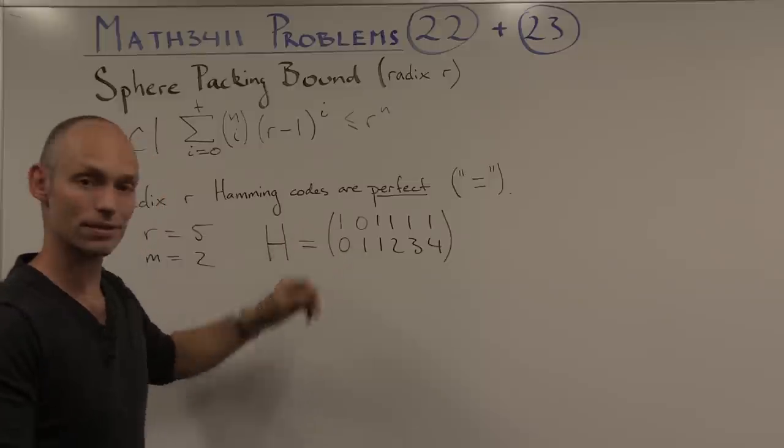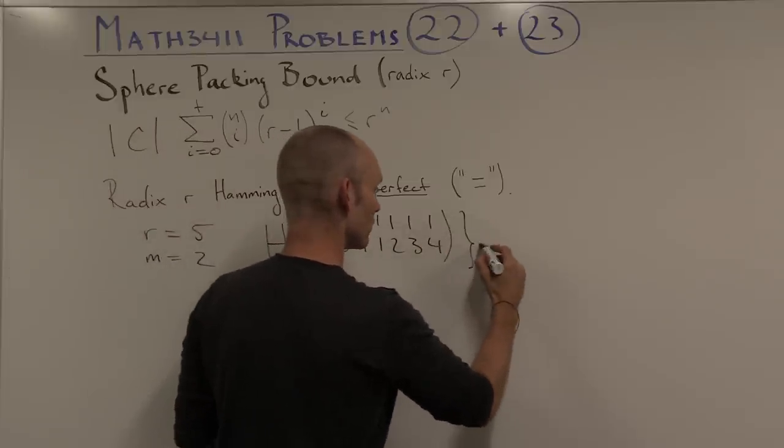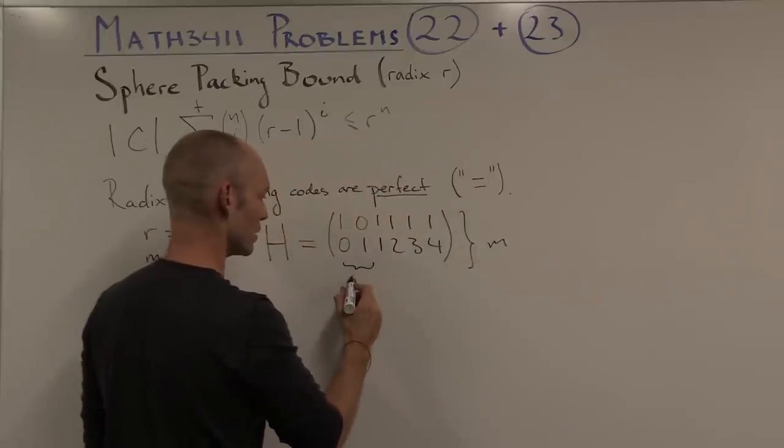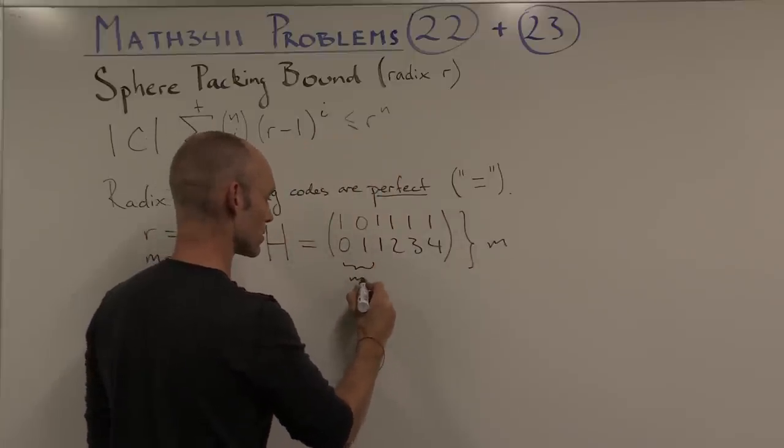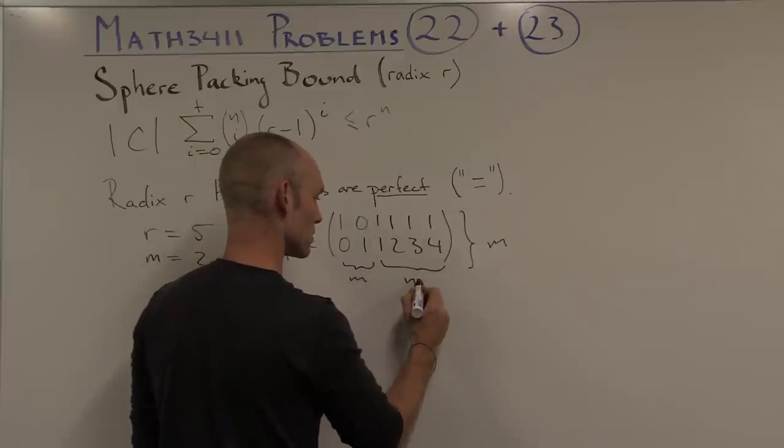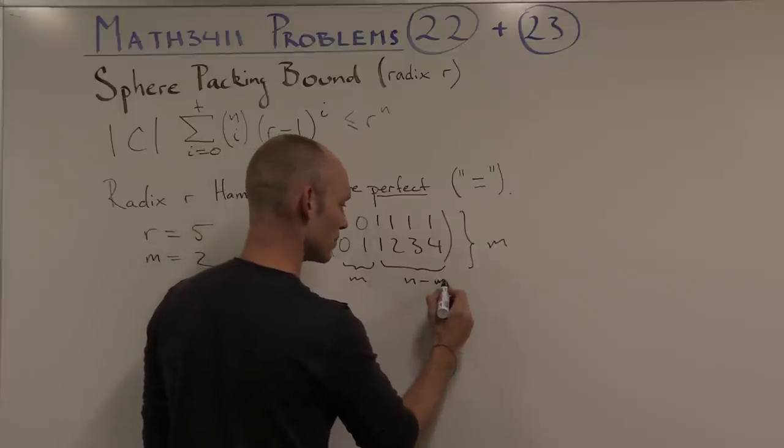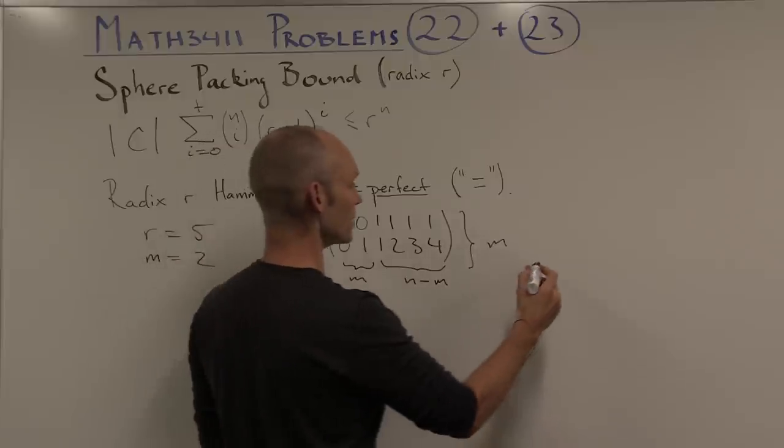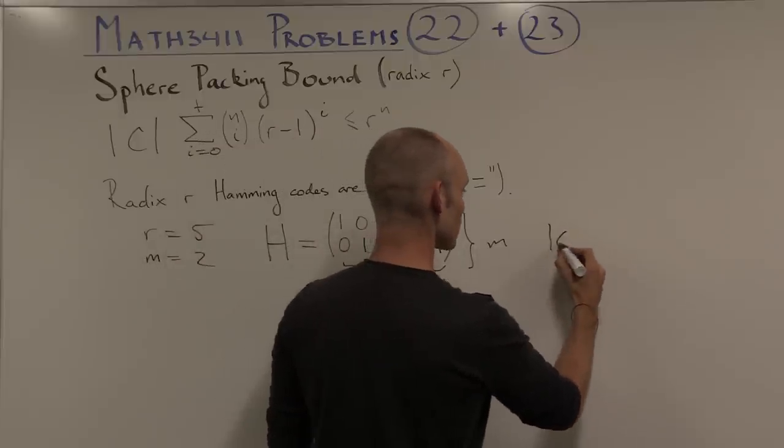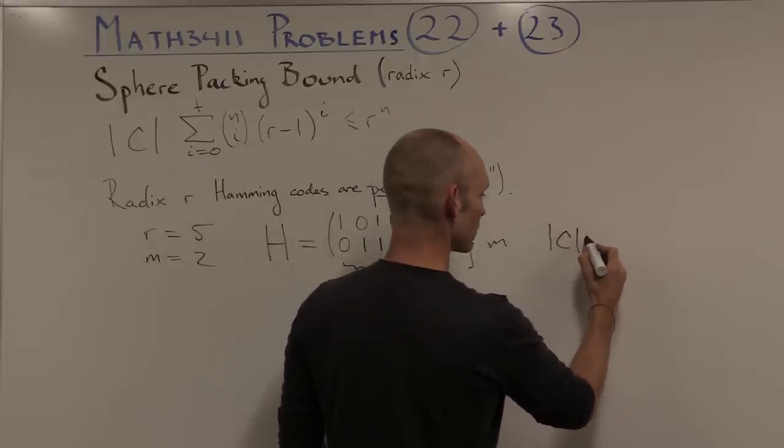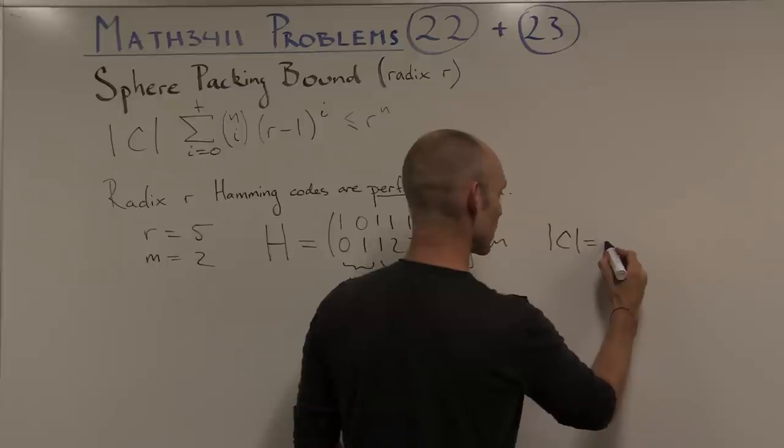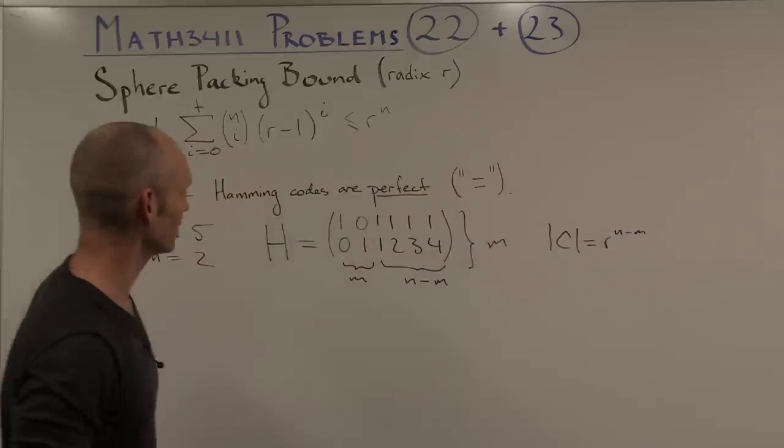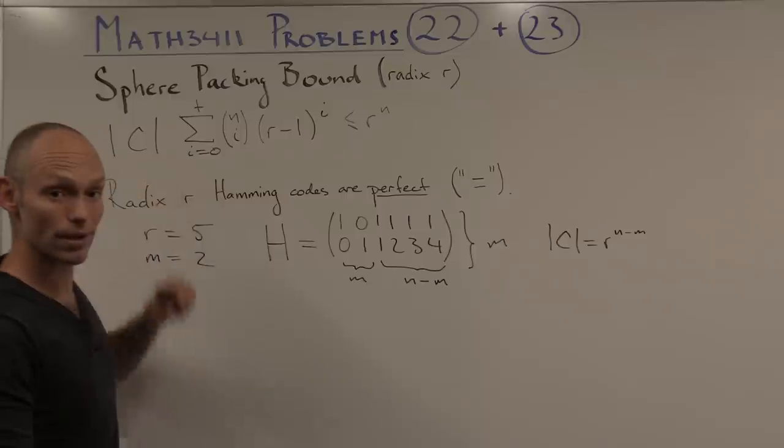So let's have a look at this code. Here we have m rows and m check bits. We also have some information bits, n minus m of those. And that gives us the dimension of the code. So we have that |c|, the number of codewords, is r to the power of n minus m. So that's one of the pieces of the puzzle.